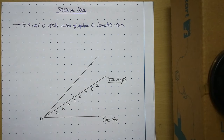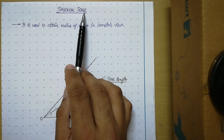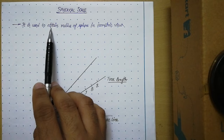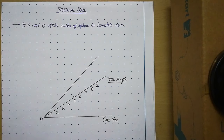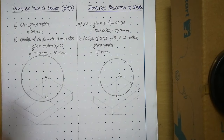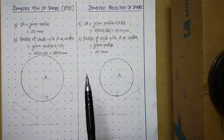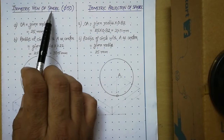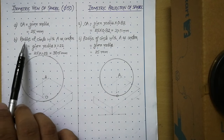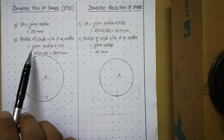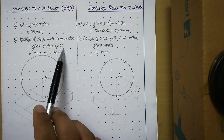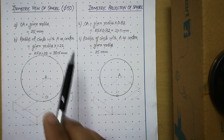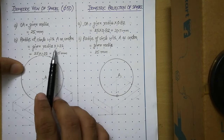Hello students, today we will learn about the next topic of isometric projection: the spherical scale. Spherical scale is used to obtain the radius of a sphere in isometric view. If you recall the lecture on the isometric view of a sphere, we discussed that to draw the isometric view of a sphere, you have to draw a circle of radius equal to the given radius multiplied by 1.22. This 1.22 is the factor obtained from the spherical scale.